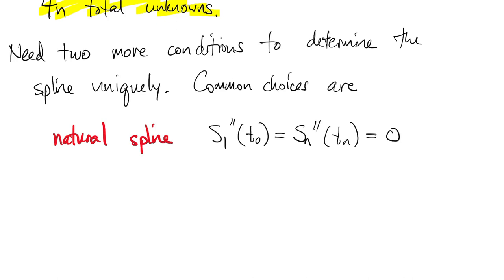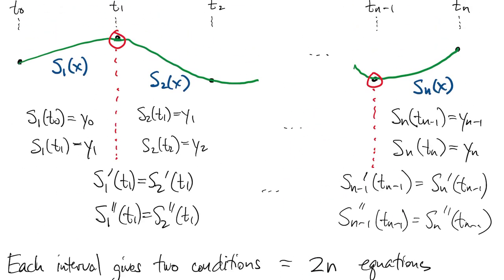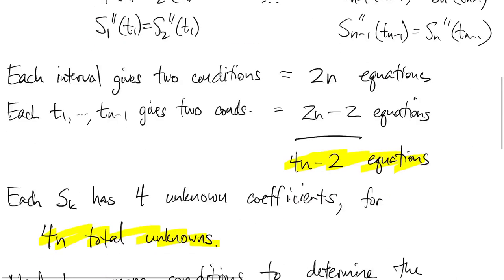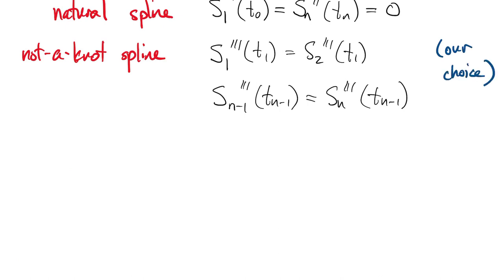For pointwise accuracy, a better choice is called the not-a-knot spline, which gives us an extra degree of continuity at two of these knots. In fact, it says that these two points aren't knots at all because two cubics that match up to the third derivative are really the same function. That's the choice that we'll use in our implementation.